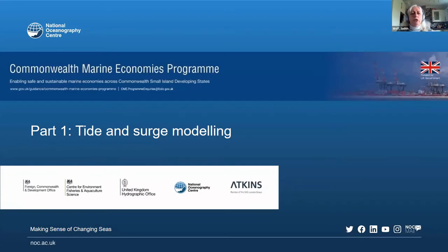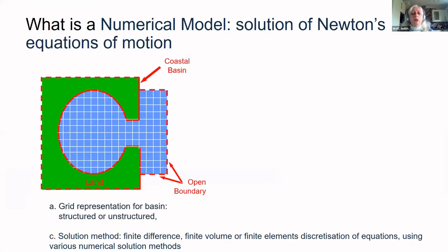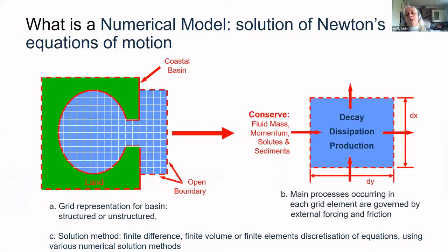So this is what I was going to talk about in two parts: tide and surge modelling, and wave modelling. Showing a couple of schematics for anyone who doesn't know what a model is. The main point is that we take a bit of sea — it could be a coastal basin — where you discretise into boxes and solve the equations of motion. We're solving equations which conserve mass and momentum, and also transporting things around with the flow.